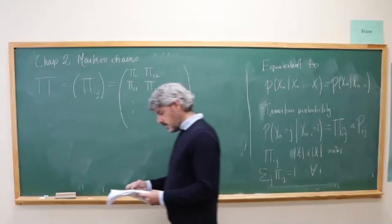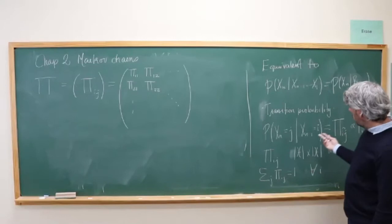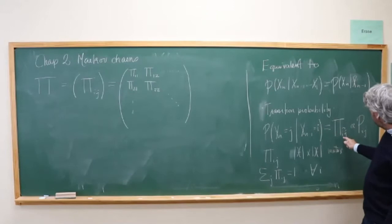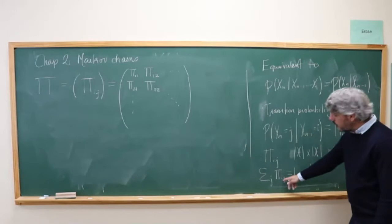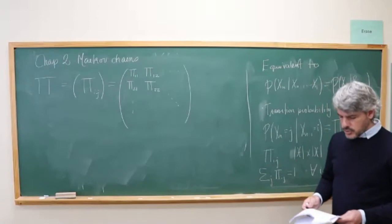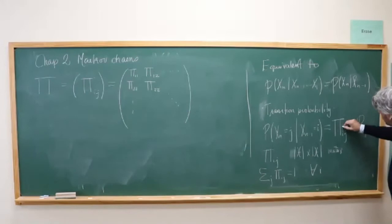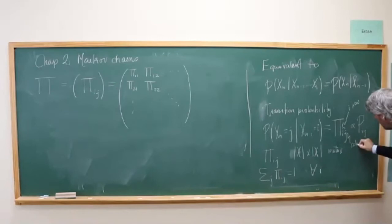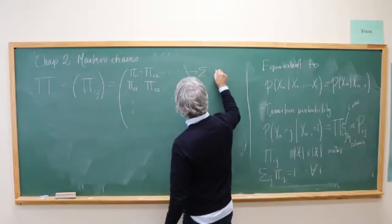A note: if you take a physics textbook with Markov chain information, the indices are usually switched — the probability to reach j from i is denoted pi_{ji}. So instead of summing over the column index, you sum over the row index to get one. That's the physics convention. The convention I'm using is the mathematics convention: the first index i is the row, j is the column, and rows sum to one. In physics conventions, columns sum to one.